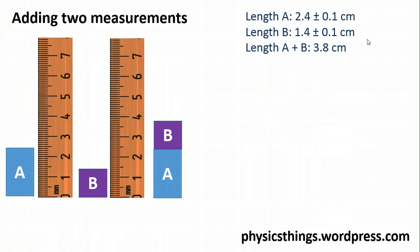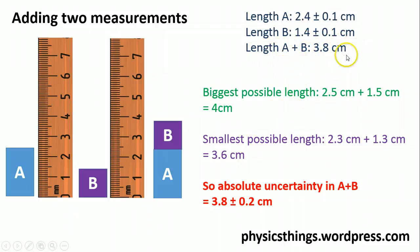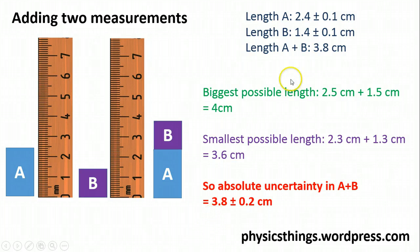The biggest possible length I could have would be 2.4 + 0.1 = 2.5 cm, plus 1.4 + 0.1 = 1.5 cm, giving an overall length of 4 cm. The smallest possible length, taking the smallest versions, would be 3.6 cm in total. So I have my actual overall length of 3.8 cm with a maximum possible length of 4 cm — that's 0.2 cm greater — and a smallest possible length of 3.6 cm, which is 0.2 cm less.